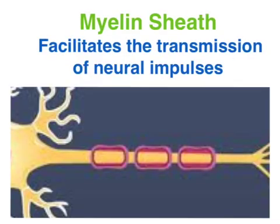The myelin sheath is a fatty substance which protects and insulates the axon. Myelination is a critical aspect of learning and memory formation.